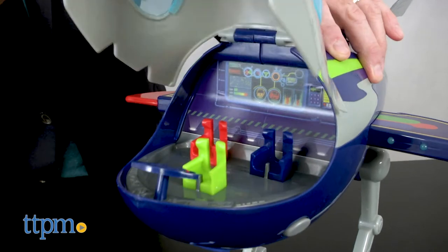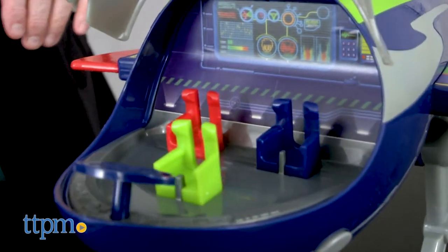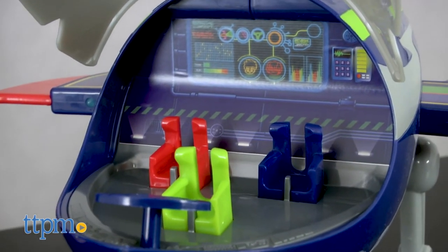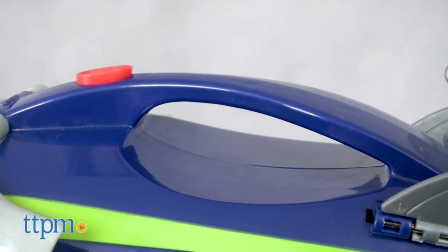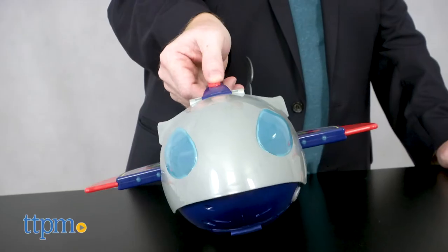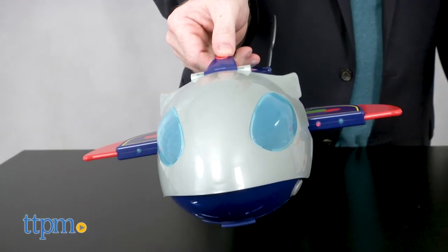Kids can open the front of the ship to reveal the cockpit where inside there is room for all three PJ Masks heroes. Little pilots can take flight by gripping the handle of the ship and pressing the button to activate lights and sound.